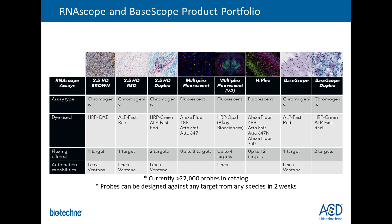This slide summarizes the entire RNAscope and BaseScope product portfolio. We offer assays in chromogenic single-plex, chromogenic duplex, and a strong multiplex fluorescent line in three flavors: the V1 assay for up to three targets in fresh frozen tissues, the V2 assay for up to four targets optimized for FFPE tissues which typically have very high autofluorescence and potentially more degraded RNA, and our recently launched HiPlex assay which can detect up to 12 targets simultaneously with fluorescent labeling.